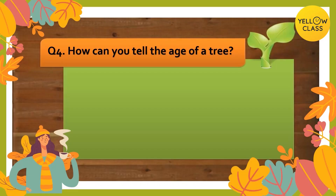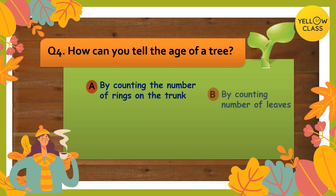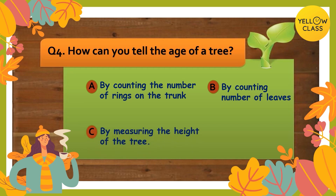Let's move on to question number four — time to get it right! Question number four: how can you tell the age of a tree? Option A by counting the number of rings on the trunk, option B by counting number of leaves, option C by measuring the height of the tree, and option D by measuring the width of the tree. Your time starts now!